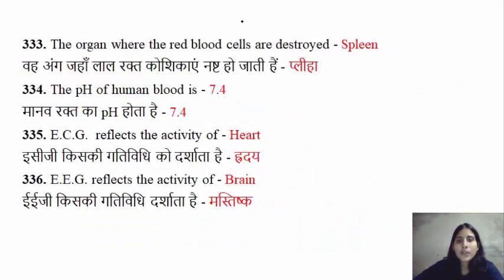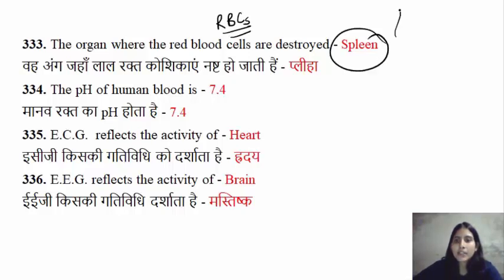Red blood cells — your RBCs — are destroyed in which organ? The destruction occurs in the spleen, which is why we call it the graveyard of RBCs.